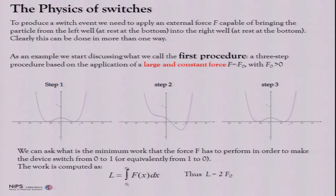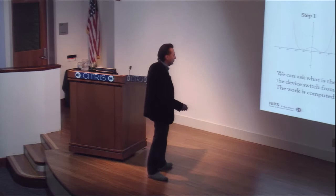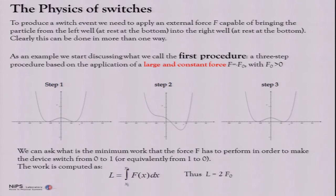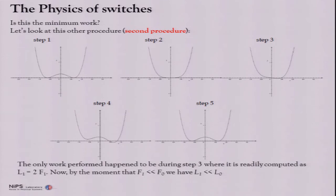Let's consider a common procedure in operating the switch. Usually what you do, you apply a large and constant force. So, the role of the force is to act for a certain amount of time by tilting the potential. So, if the system initially is on this well, after the tilting, it will go on this well. And so, the switch is realized. This is a three-step switch. How much work is necessary to do this switch? Well, that's easy to calculate. Work is force times displacement. And you have to integrate over the path. So, in this case, the force is constant. So, you can take it out. And let's suppose that these two minima are distant one from zero, plus one and minus one. So, the work is two times the force, the constant force.